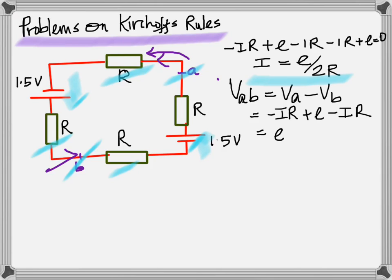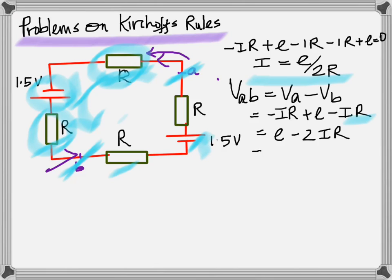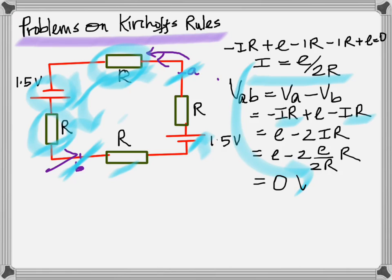How do you get that? Because if you start from A and go in the counterclockwise direction, when you go from A to B you have minus IR here, plus E here, and minus IR here — and that's all you need, because you're looking at the potential difference between A and B. This can be written as E minus 2IR, and substituting I equals E over 2R, you get minus 2E over 2R, the 2's and R's cancel, and you get 0 volts.